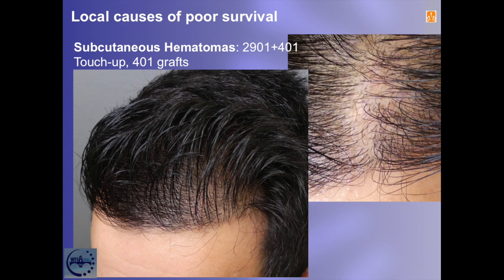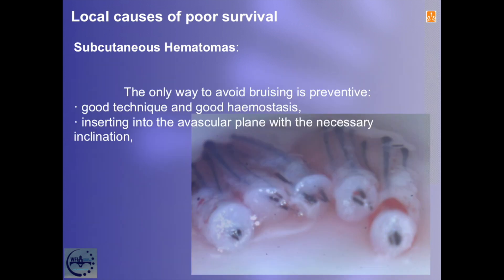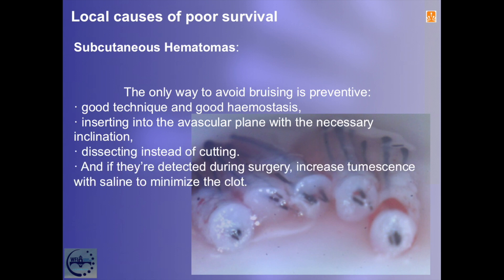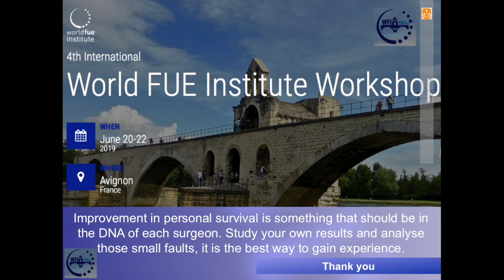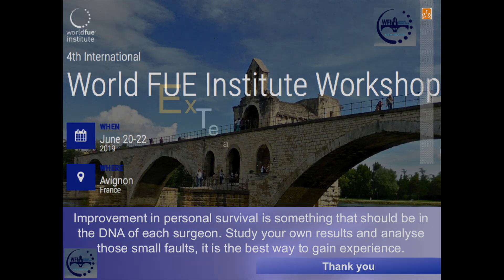The only way to avoid bruising is preventive good technique and good hemostasis: inserting into the avascular plane with the necessary inclination, dissecting instead of cutting. If hematomas are detected during surgery, increase tumescence with saline to minimize clotting. What's exposed in this presentation is the result of observation in the search for the greatest possible survival improvement. In personal practice, survival should be in the DNA of every surgeon — study your own results and analyze those small faults. It's the best way to gain experience.